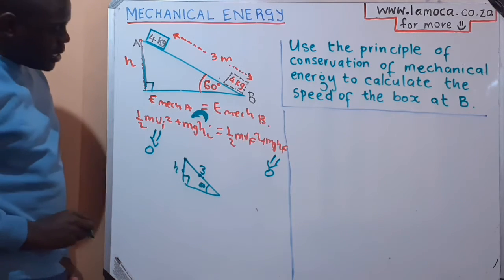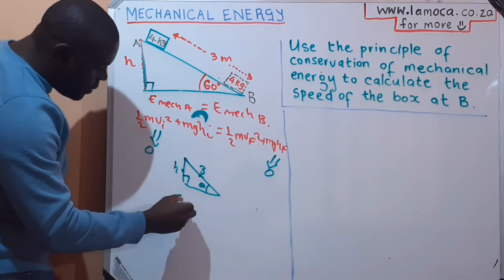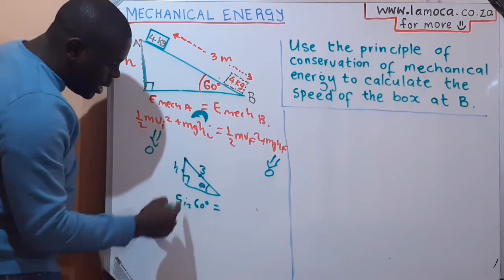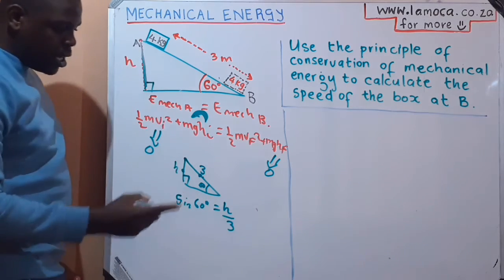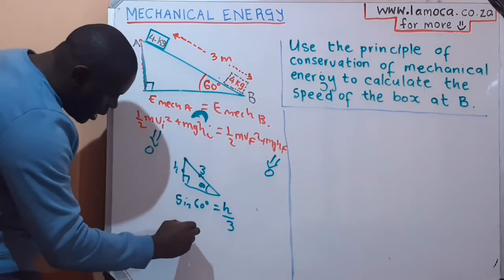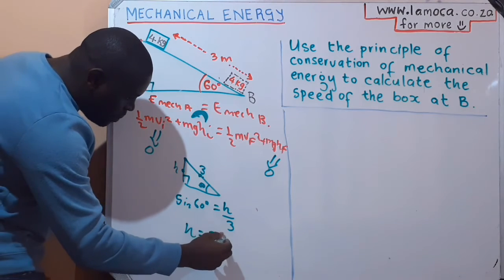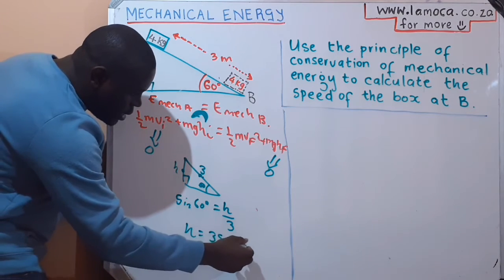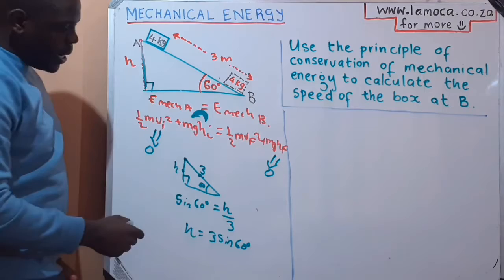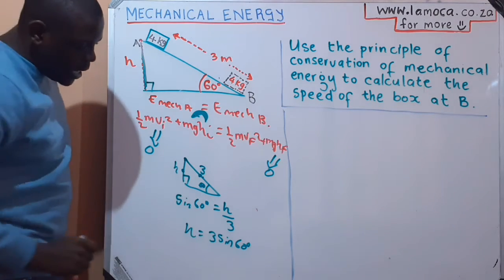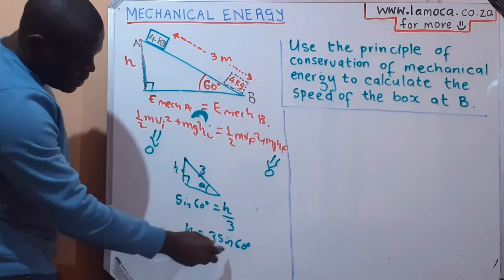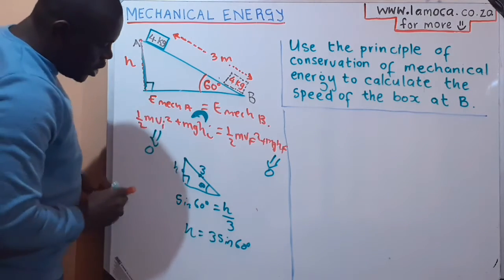From your trig ratios, if I've got the opposite side and the hypotenuse, opposite over hypotenuse, I have to use the sine. So sin(60°) = h/3. What is my h going to be? The h is just going to be 3 sin(60°). I get my h to be 3 sin(60°).